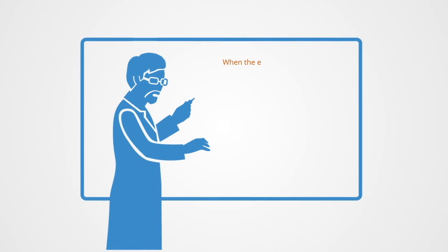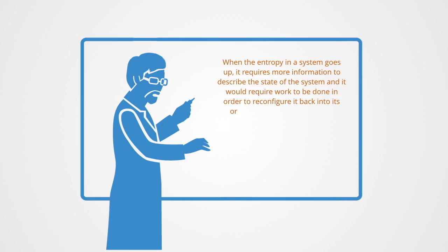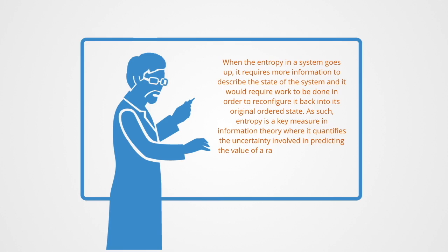When entropy goes up, it requires more information to describe the state of the system, and work would be required to configure it back into the original ordered state. Entropy is a key measure in information theory, where it equates to the uncertainty involved in predicting the value of a random variable.